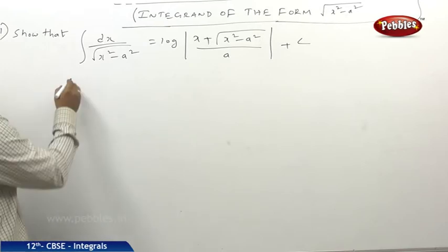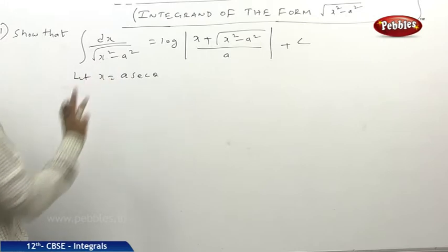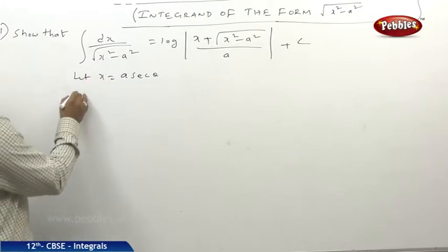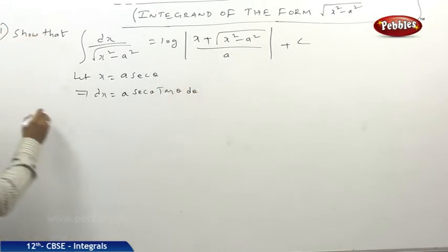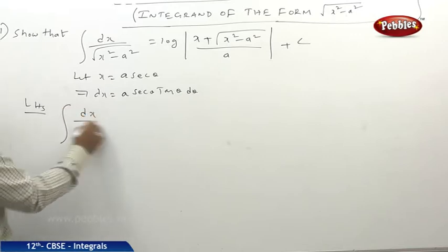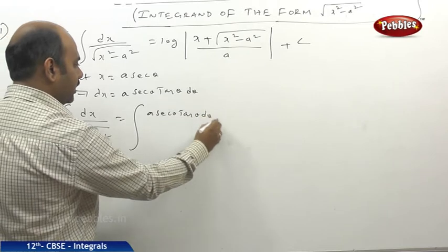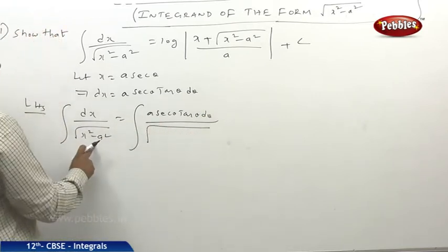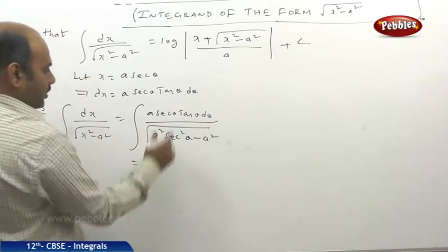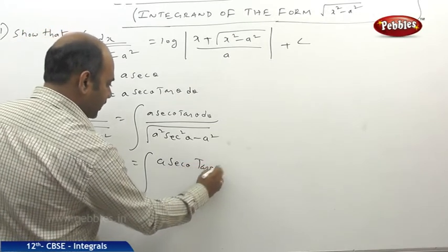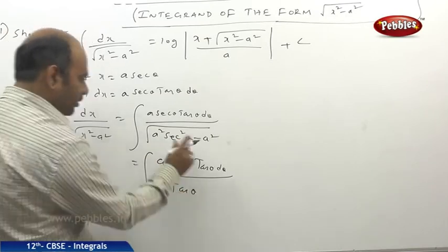Whenever this kind of problem comes, put x equal to a sec θ, because we know sec²θ minus tan²θ equals 1. Then dx equals a sec θ tan θ dθ. The integral of dx by under root of (x² minus a²) becomes a sec θ tan θ dθ divided by under root of (a² sec²θ minus a²). Taking a² outside, under root of (sec²θ minus 1) equals tan θ.